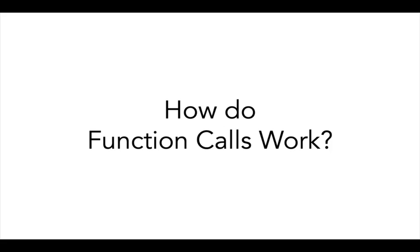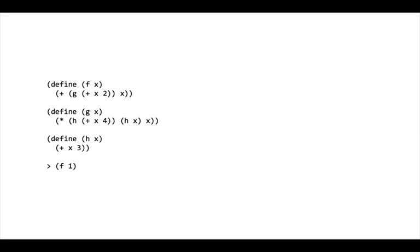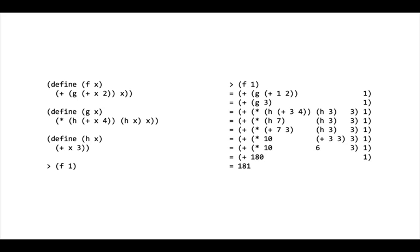Consider the following program. Suppose we run the expression f of one by the rules of substitution we learned in school. This evaluates to an answer as follows. You might want to pause and make sure you follow everything on the screen before you continue.